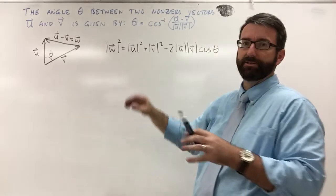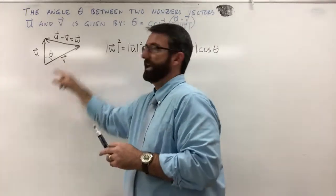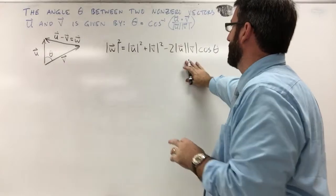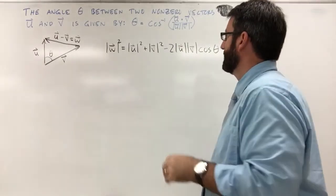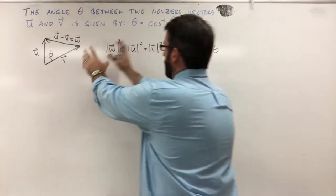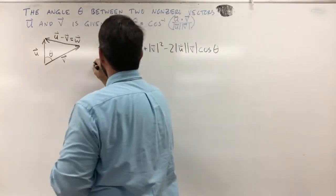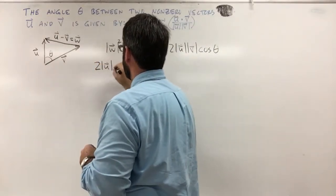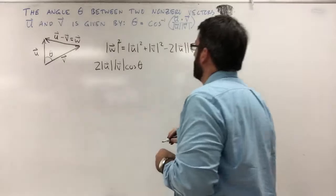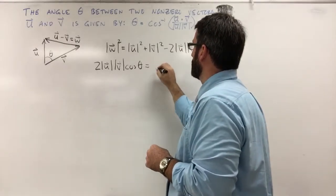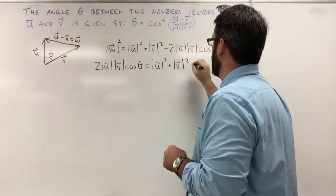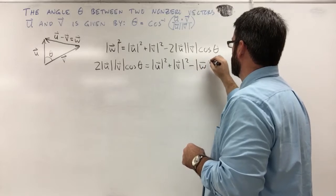So remember, the magnitude here just means it's the length of each of our sides. We've applied the law of cosines and gotten this. Let's rearrange this equation a little bit — moving w over to the other side, we get that 2 times the magnitude of u times the magnitude of v times the cosine of theta is equal to the magnitude of u squared plus the magnitude of v squared minus the magnitude of w squared.